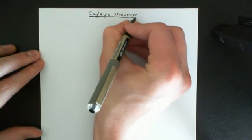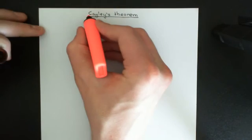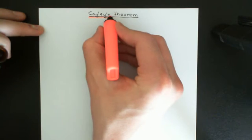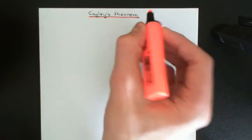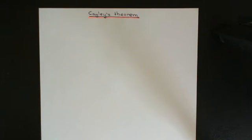Let me outline the structure of this video. I'm going to start off with a bit of the motivation for Cayley's theorem — what we're actually trying to achieve. Then I'll go over a little bit of prerequisite knowledge. I want to explain something about the composition tables of groups before we go on to look at Cayley's theorem. And then finally I'll actually show you Cayley's theorem and how it works and how it achieves what we set out to achieve.